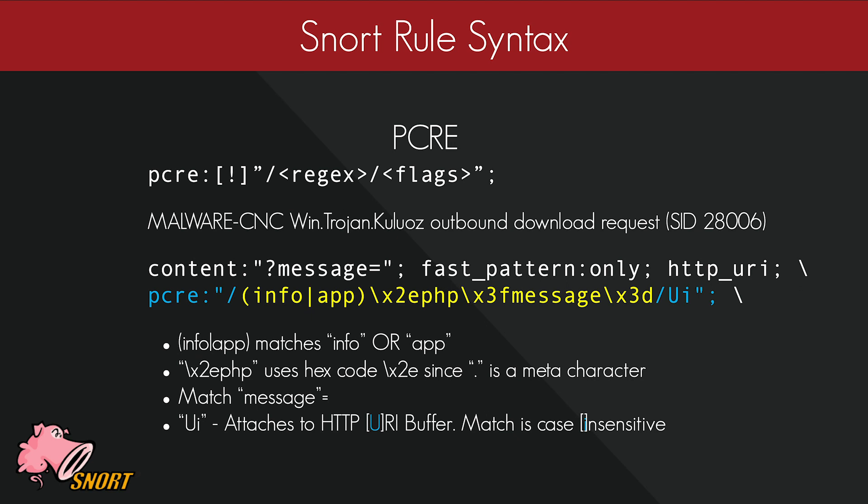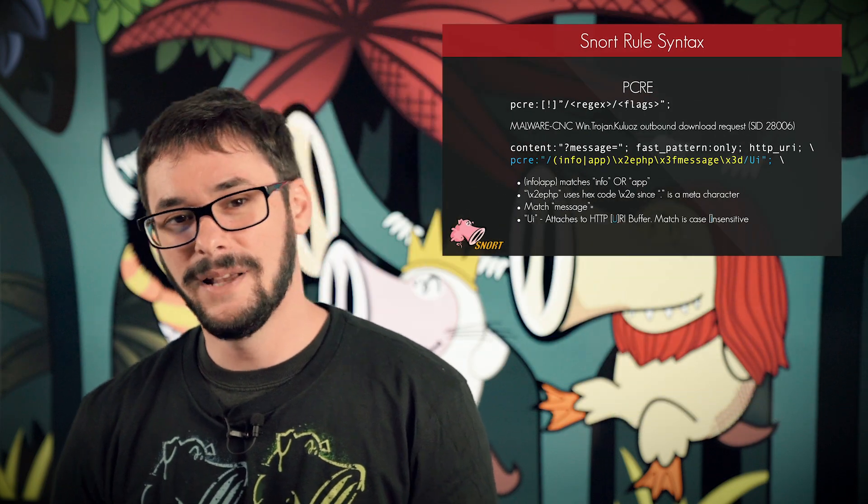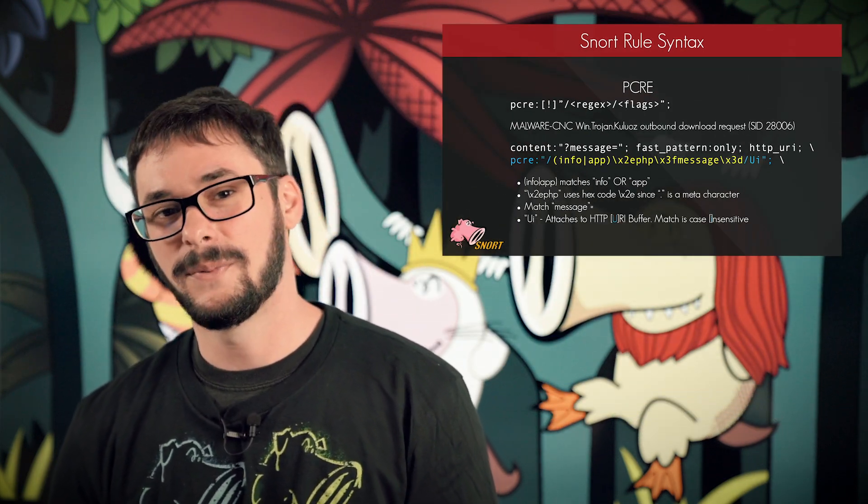I'm not going to go into depth on PCREs since it's a fairly in-depth topic by itself. This is the generic syntax of how we use it, shown in an example of a malware CNC rule. You can use PCREs to detect something without having to write multiple rules. Here we look for the string 'info' or 'app' followed by '.php' and the message parameter, anchored to the URI buffer. The Snort buffers are available when using a PCRE — we specify the U flag for the URI buffer and the I flag for case-insensitive matching. I recommend checking out Regex101 if you're interested in creating regular expressions on your own.